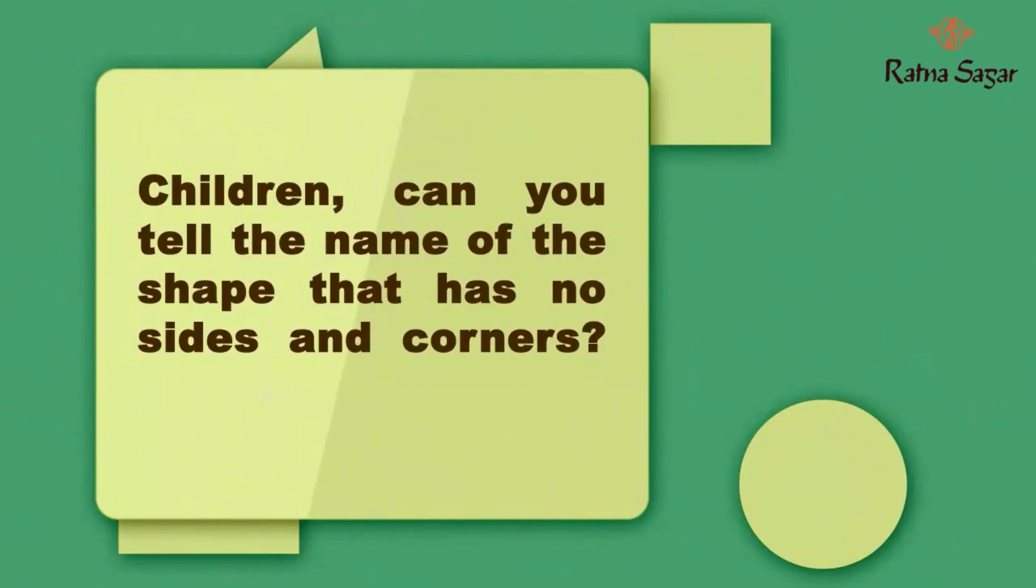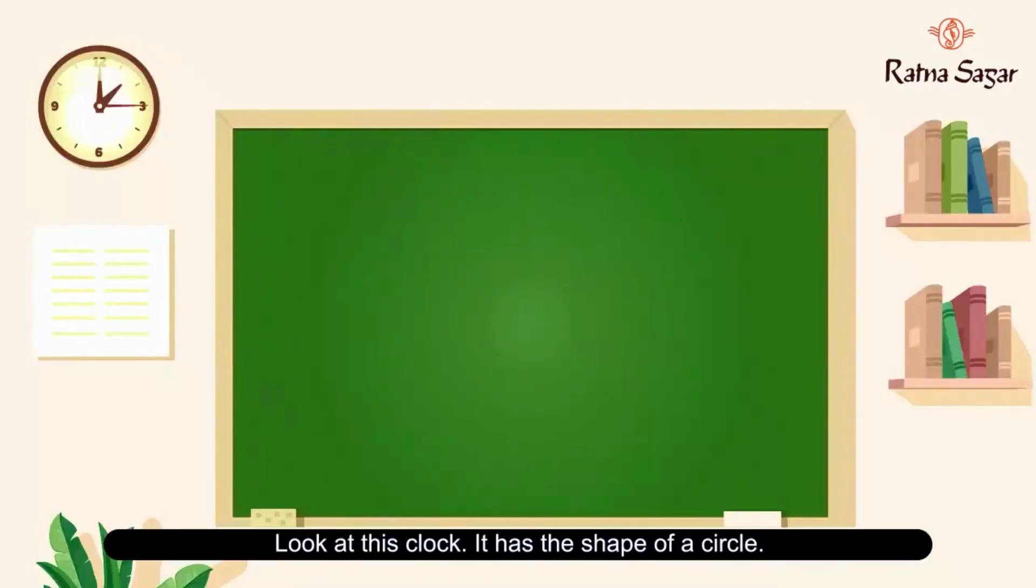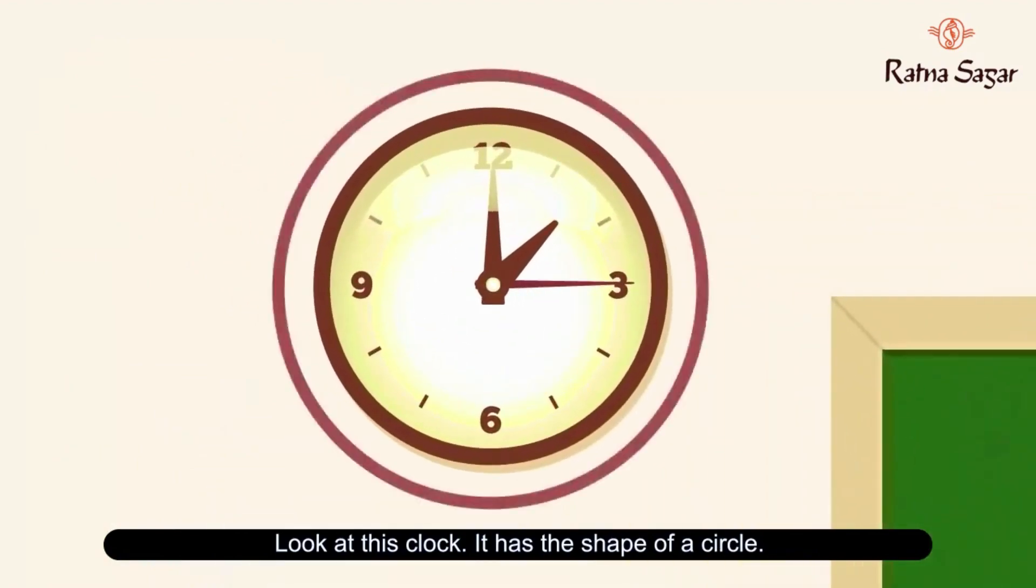Children, can you tell the name of the shape that has no sides and corners? Yes, a circle has no sides and no corners. Look at this clock. It has the shape of a circle.